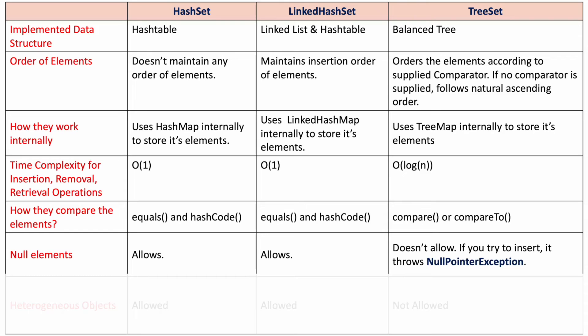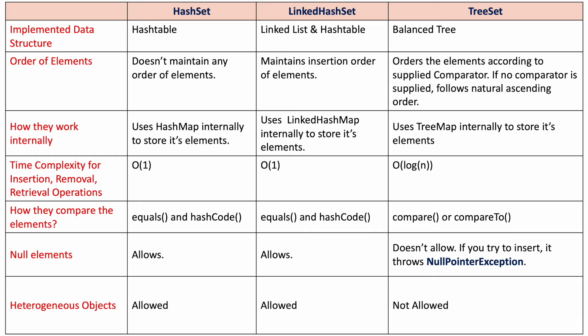Regarding null elements: HashSet allows one null element. Null element insertion is possible in HashSet and LinkedHashSet. In TreeSet, we cannot add even a single null element — if you try to insert null, it will give a NullPointerException at runtime.